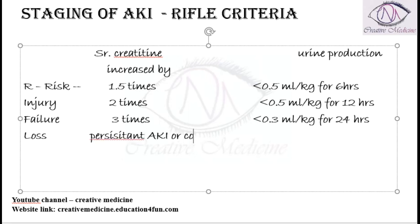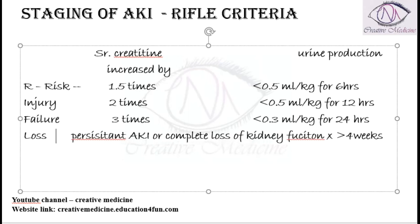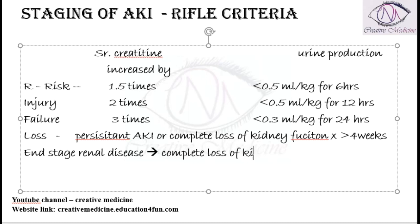L stands for Loss. In Loss, there is persistent acute kidney injury present in the patient, or there can be a complete loss of kidney function. If there is complete loss of kidney function for more than four weeks, then we call it Loss. E stands for End Stage Renal Disease, in which there is complete loss of kidney function.